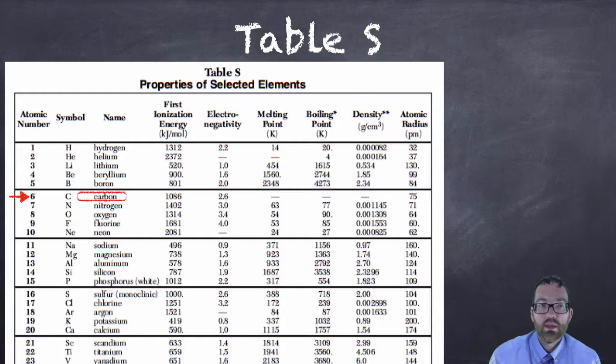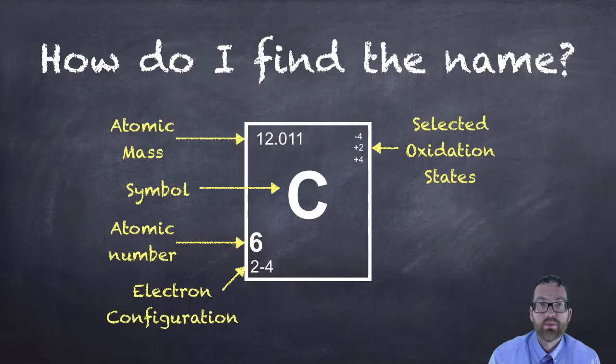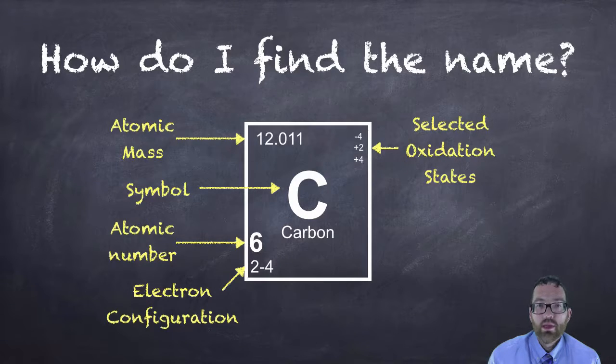Go to your table S, scan down until you find the atomic number six and read over, and of course C is carbon. Some of these you're going to memorize over the course of the year, some of these you aren't. So you should always know how to use this method to look up the names of any element that you don't know. There we can label it carbon.